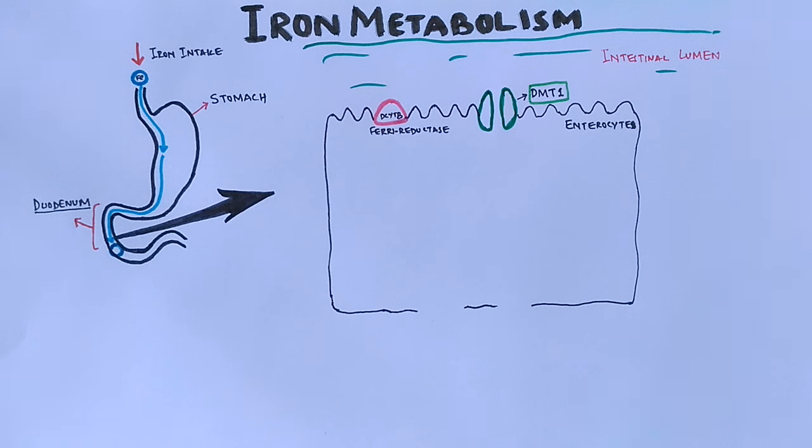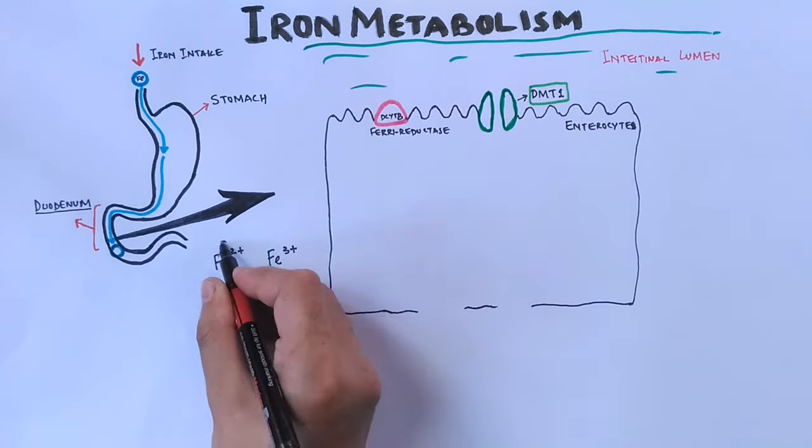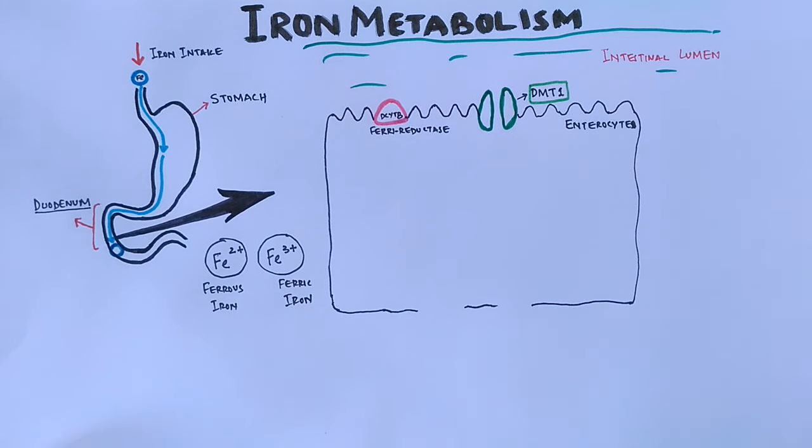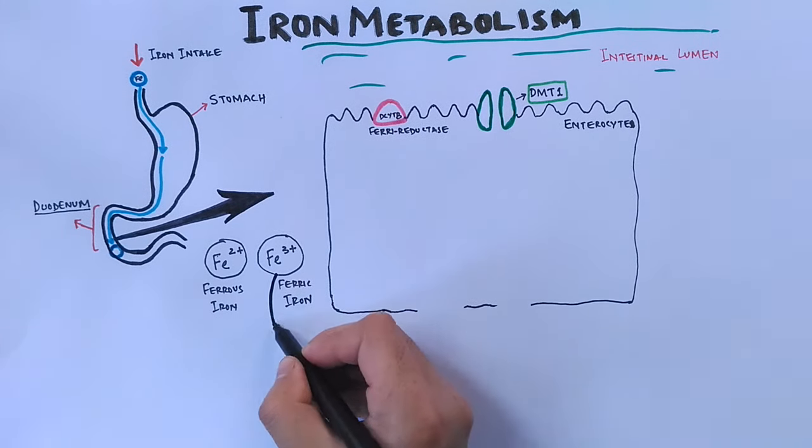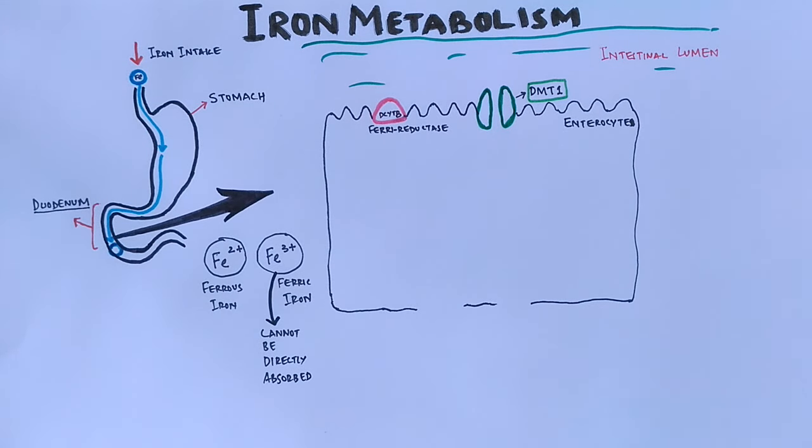Before we get into the process, let's see what iron ions we have in our body. After the breakdown of food we see we have two types of iron ions: Fe2+ and Fe3+ ions. Fe2+ is the ferrous iron, Fe3+ is the ferric iron. The Fe3+ is not directly absorbed so it needs to get converted into absorbable form, whereas Fe2+ ion can be absorbed easily by the enterocyte.